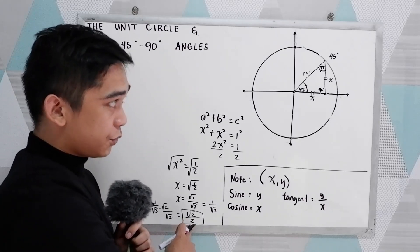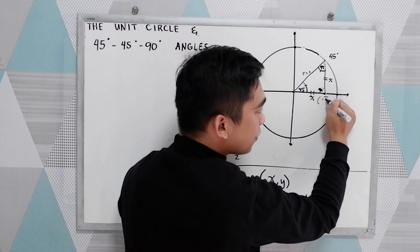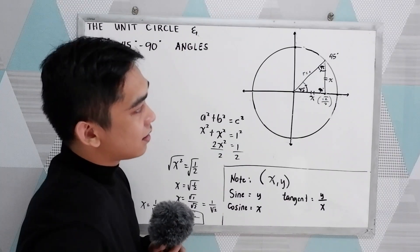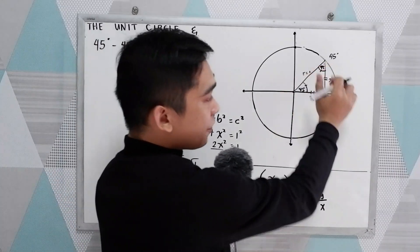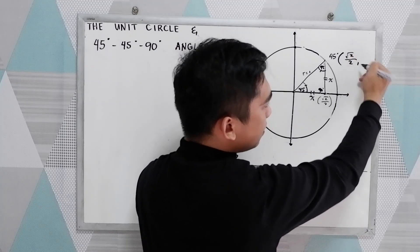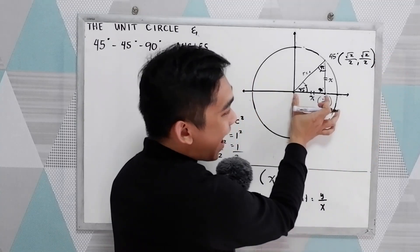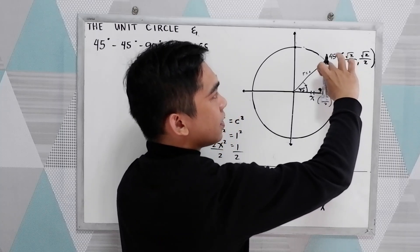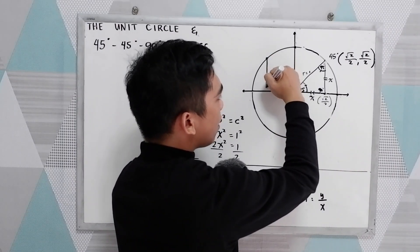So the length of this leg is square root of 2 over 2. That means the coordinate of the 45-degree angle is square root of 2 over 2 for x and square root of 2 over 2 for y. Now to get the next 45-degree angle in quadrant 2, 90 plus 45 gives us 135 degrees.